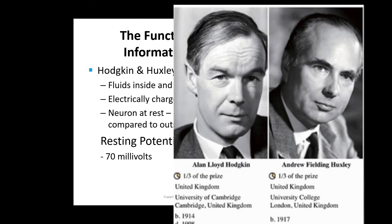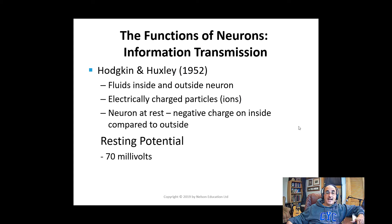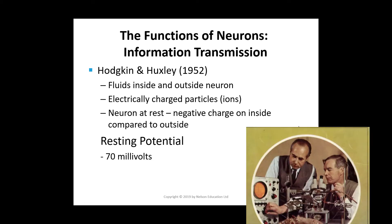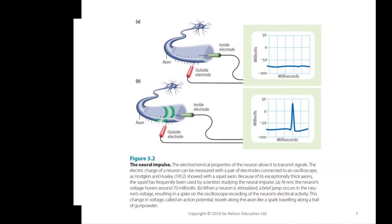When the signal gets to the end of the axon, it causes neurotransmitters to be released into the synapse — the junction of the two neurons. The chemicals flow across the synapse and stimulate the next cell. Alan Hodgkin and Andrew Huxley in the 1950s discovered the mechanics of neural transmission by studying giant squids, which have axons about a hundred times larger than human axons. They found that fluids inside and outside the neuron contain electrically charged particles, or ions, and that when a neuron is at rest the inside has more negative ions — this stable charge is called the resting potential.